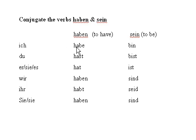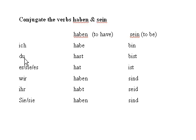To review the conjugations of haben: ich habe — I have; du hast — you have; er hat — he has; wir haben — we have; ihr habt — you all have; sie haben — you polite have, or they have.